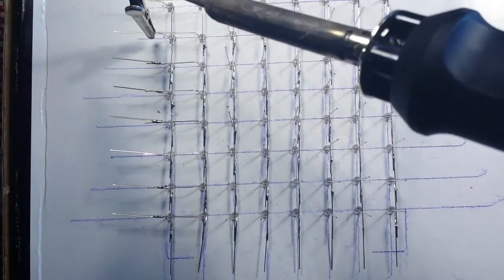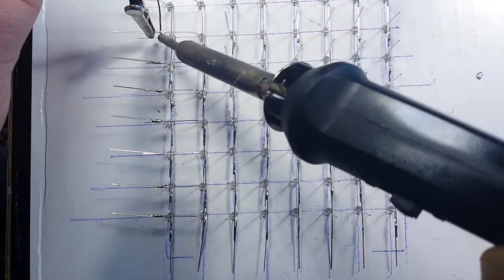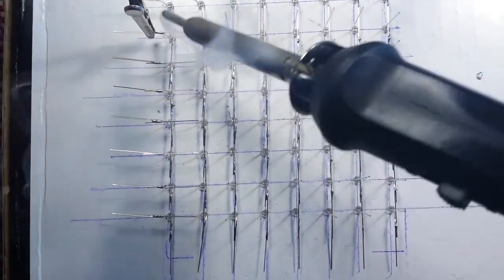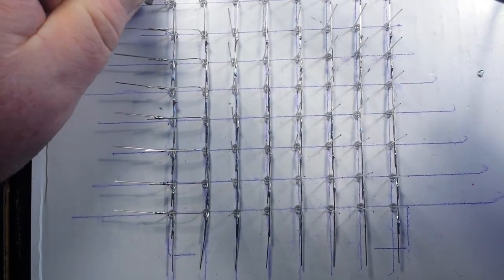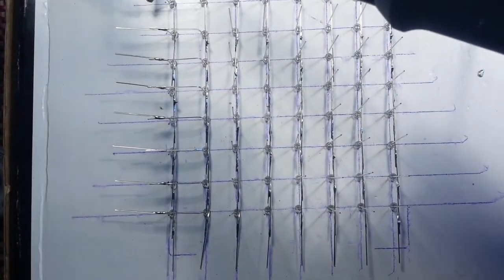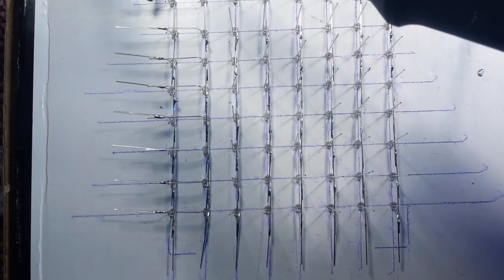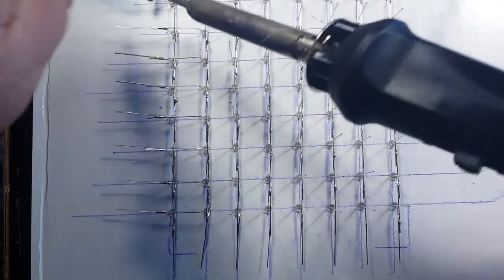So I'm using the 30 watt iron. A 20 watt would probably do fine also, but anything smaller, you're probably going to be putting too much heat into the LEDs and you might damage them.